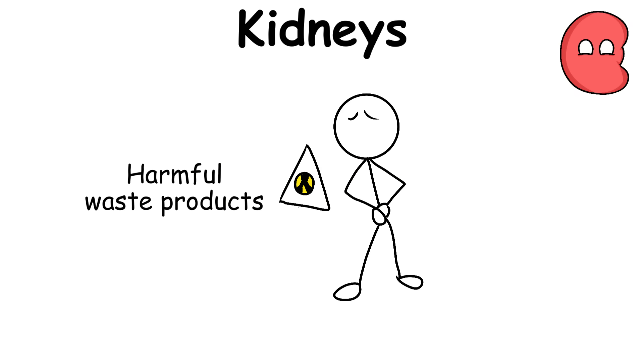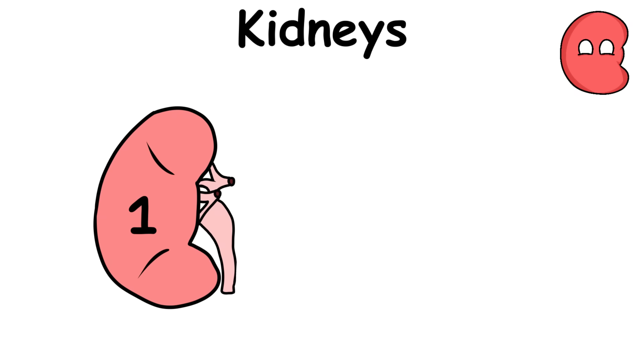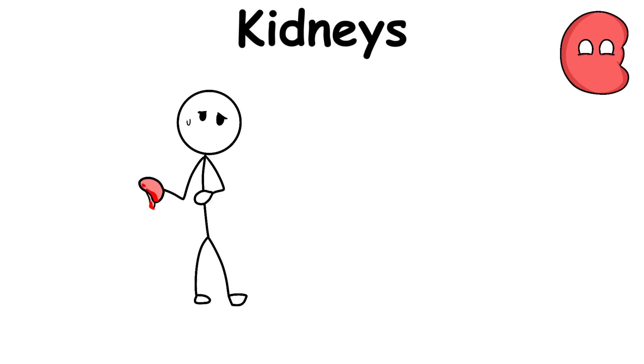Everyone is born with two kidneys. One is enough to filter enough blood to keep the entire body running normally. This explains why a lot of people donate one of their kidneys.